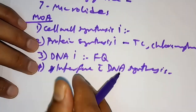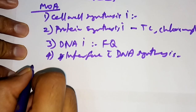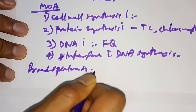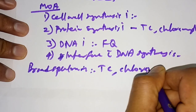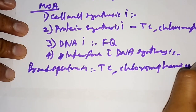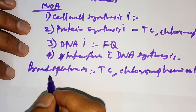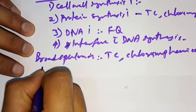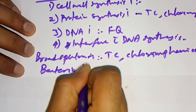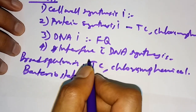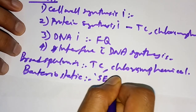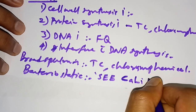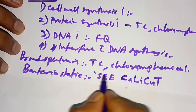Other important points: examples of broad spectrum antibiotics include tetracycline and chloramphenicol. Now for bacteriostatic antibiotics — there is a mnemonic code to remember them.